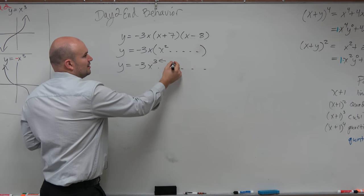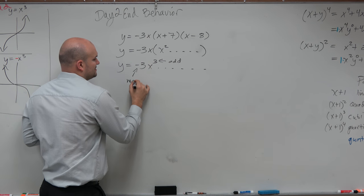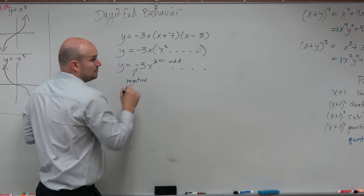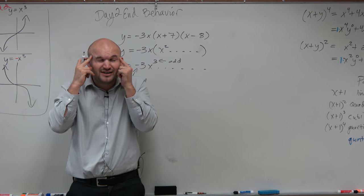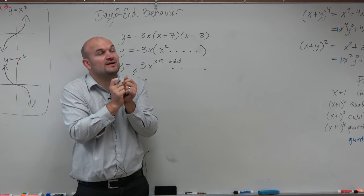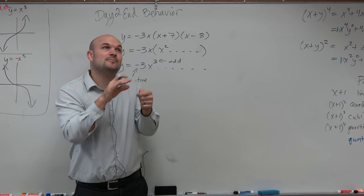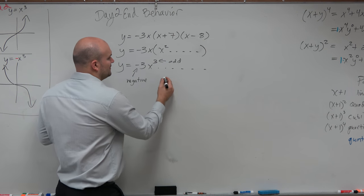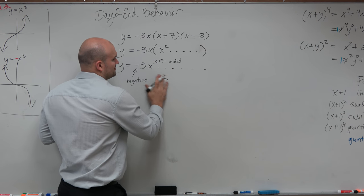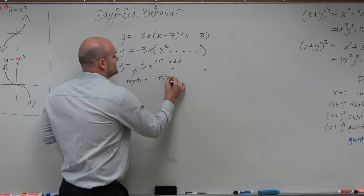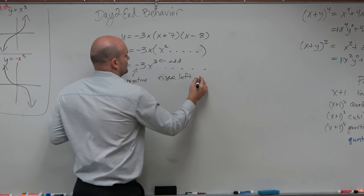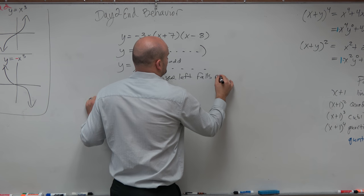Now we know that that's odd and that's negative. So based on my understanding, I already have this graph visualized. I say oh, that's just like the cubic, and that's shooting down. So if it's negative, I can say it rises left and falls right.